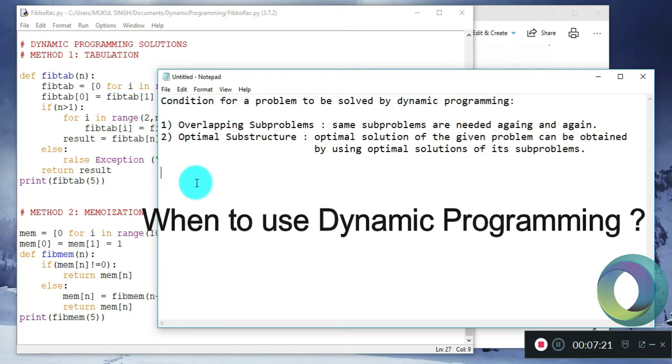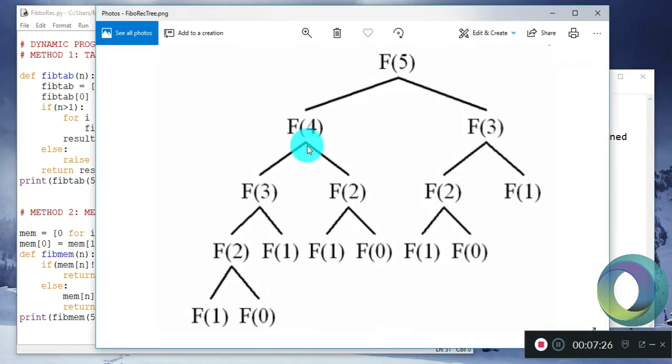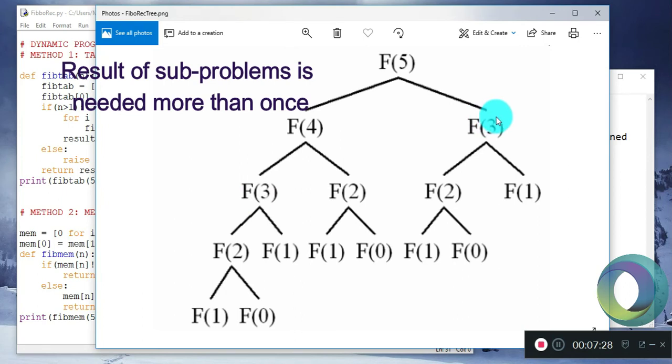In our recursion tree we saw that F of 3 occurred twice and F of 2 occurred thrice. This means that the same computation has to be done multiple times. If F of 3 and F of 2 would not have been repeated, then remembering the values would not have helped improving the complexity.